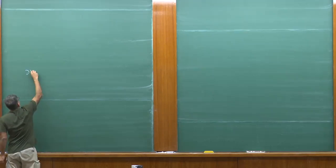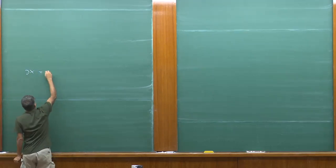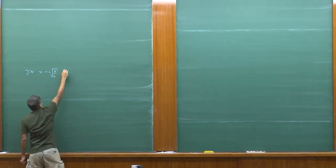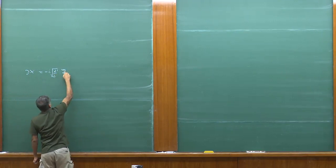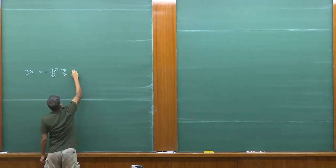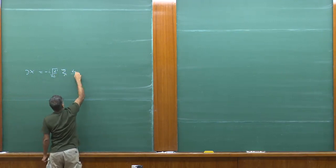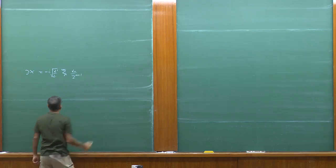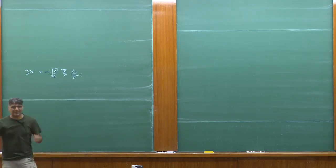We expand with del x is equal to minus i by square root alpha prime by 2, sum over m, alpha m by z to the power m plus 1. And a similar expansion for the anti-holomorphic.